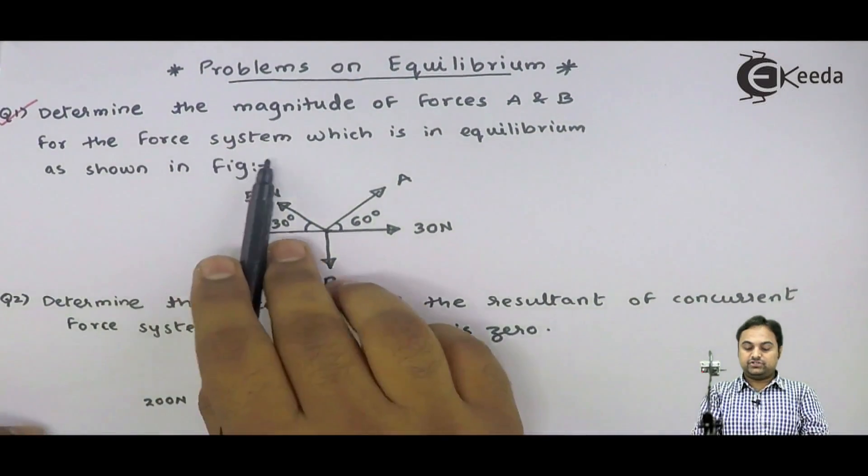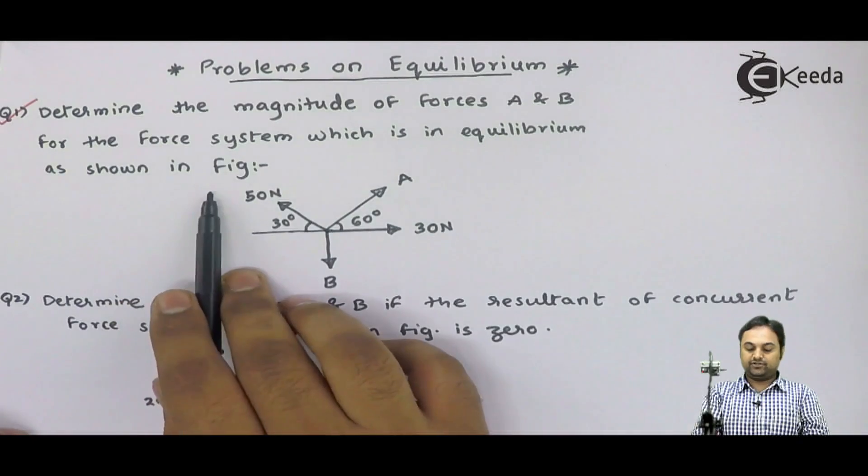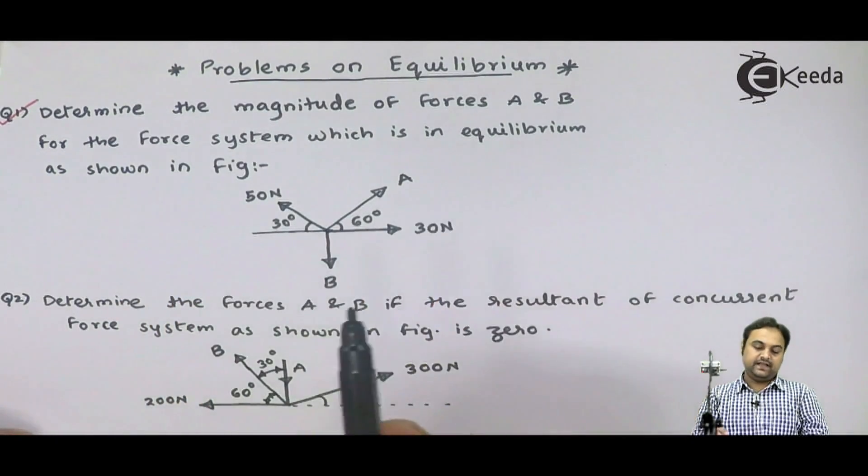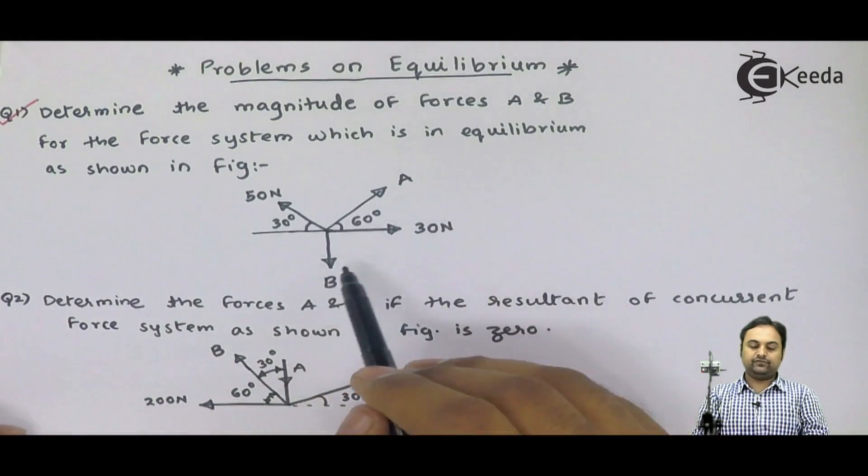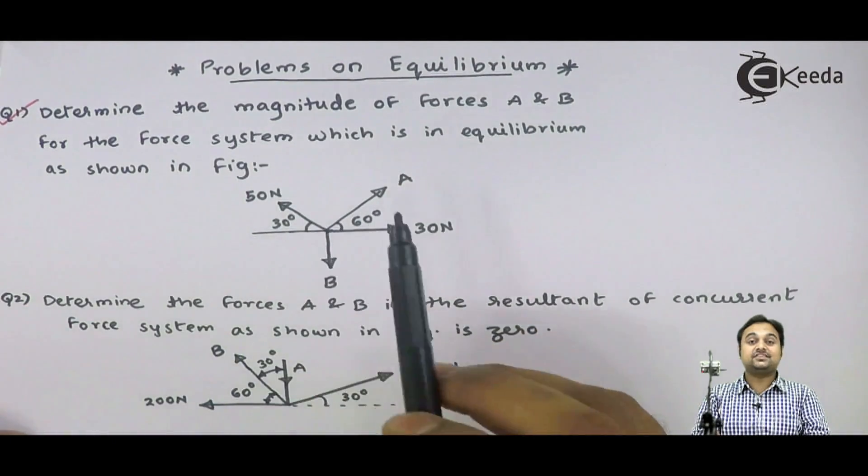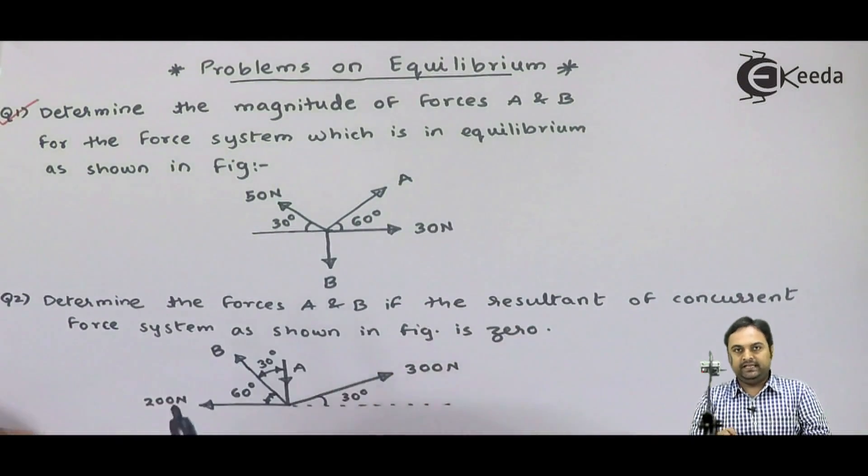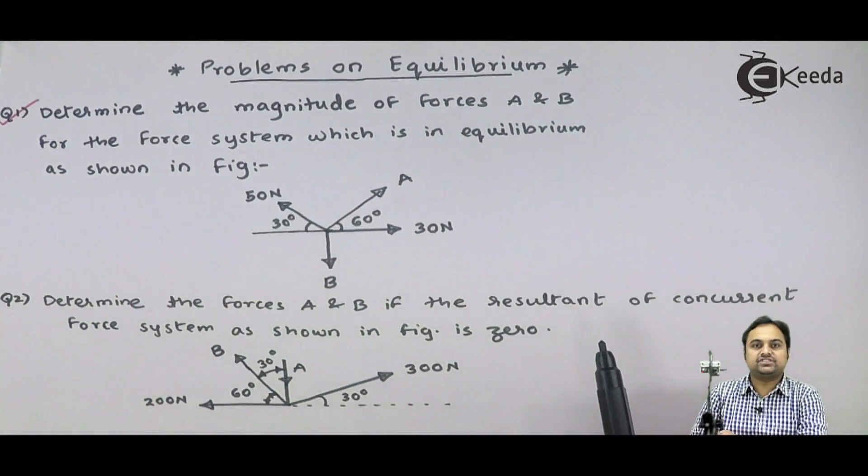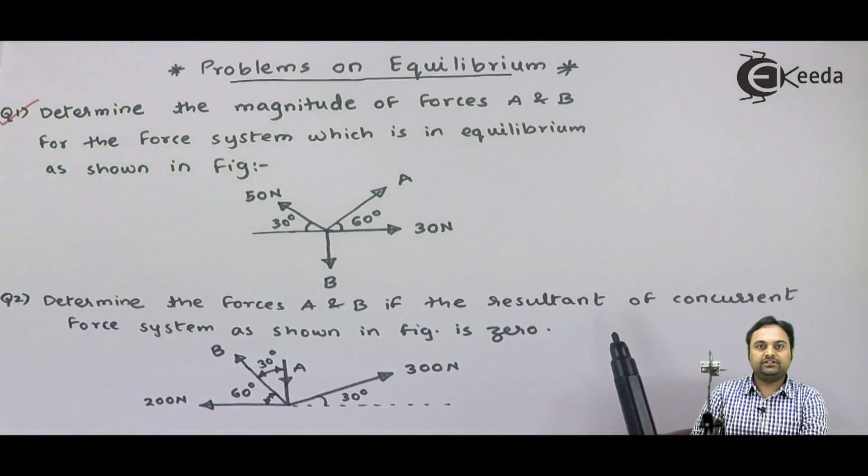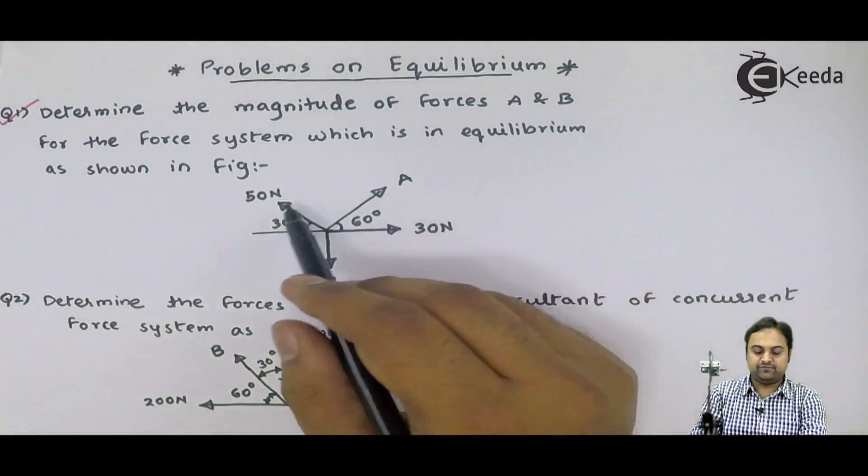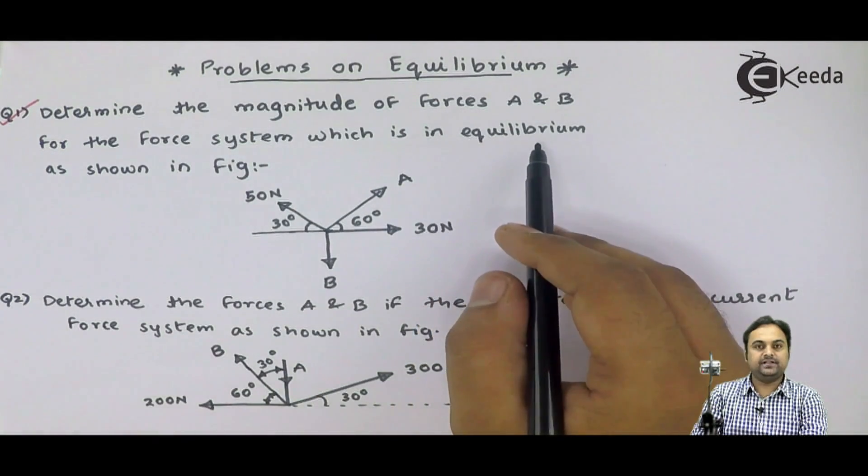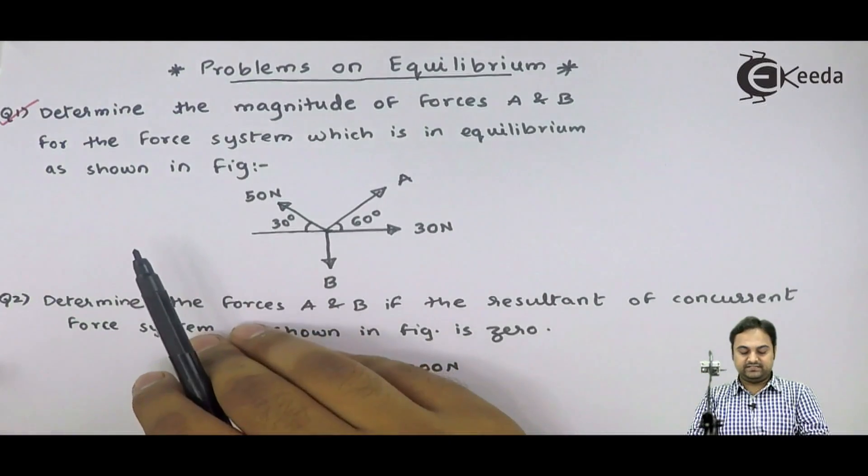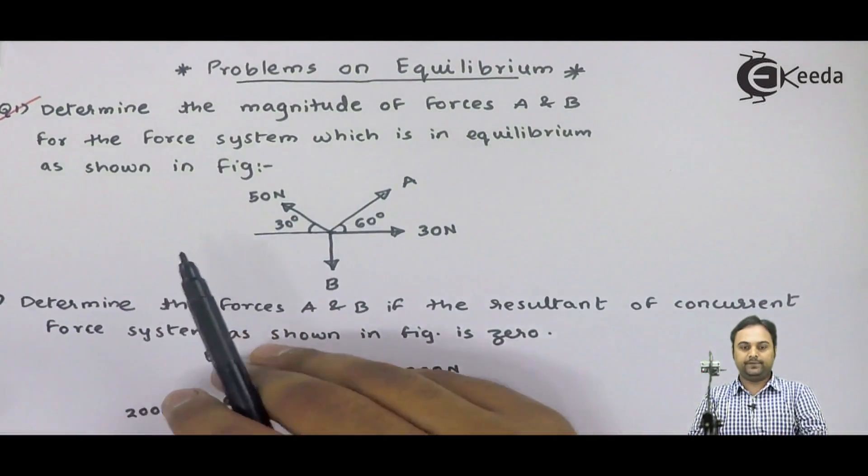For the force system which is in equilibrium as shown in figure. They have told us that this force system, because of the action of all these forces, the system is in equilibrium. In equilibrium means there are no disturbances. The resultant effect is cancelled out by the equilibrium force.